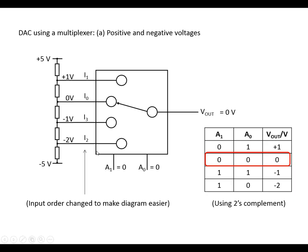Using positive and negative voltages, I'll switch the order of these around a little bit just to make it a bit clearer. But what we've got is, using 2's complement here, we've got 0 represents 0 volts, 0, 1 represents 1 volt.